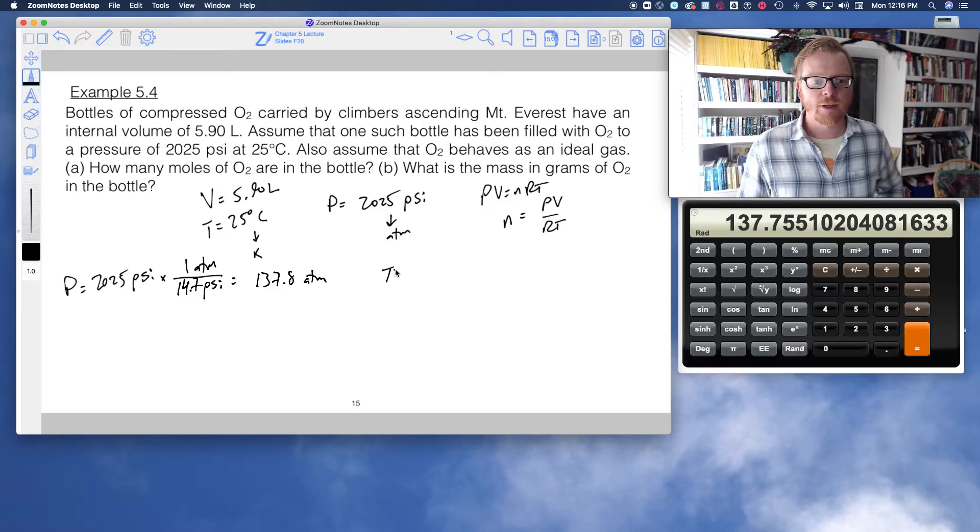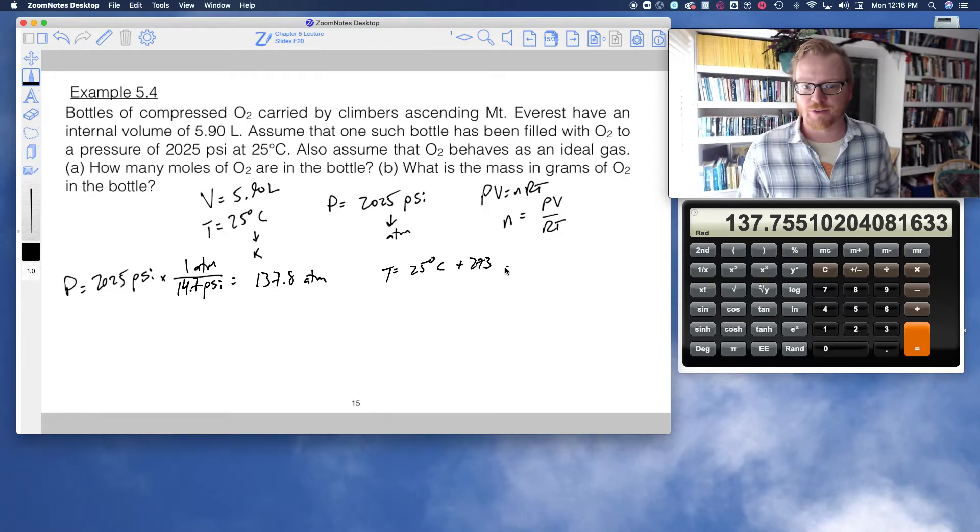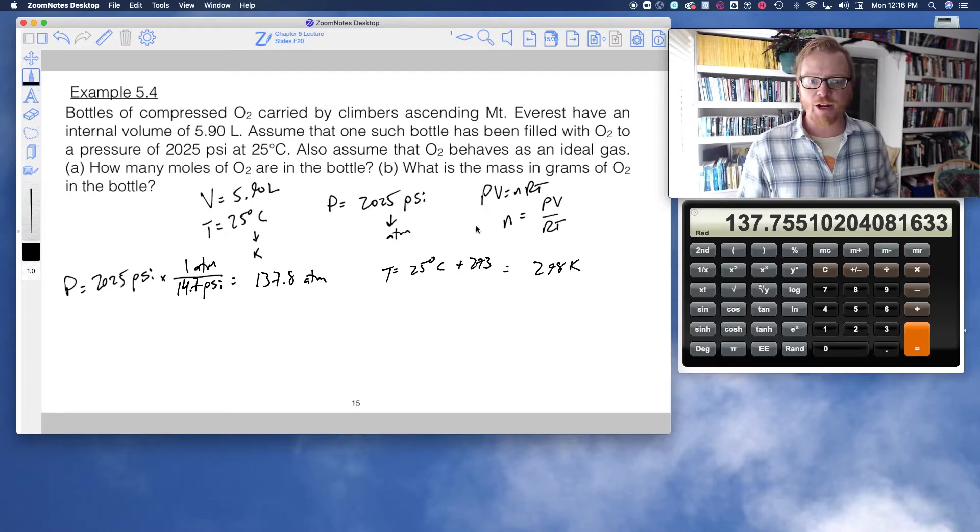So temperature is 25 degrees C, but I got to convert that to Kelvin. And I can just really easily say, plus 273. And that's going to give me 298 Kelvin. And I've got my correct V. So now all I got to do is plug and chug.